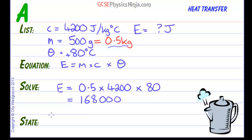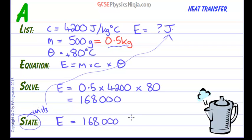There we are. Now, the last part of the calculation is to state the answer with the correct units. Always look up to our list, and we're looking for joules, so we can say that the energy required is 168,000 joules. Using list, equation, solve, state makes this calculation a piece of cake.